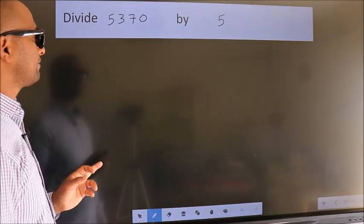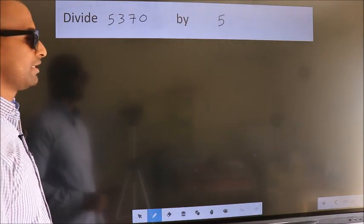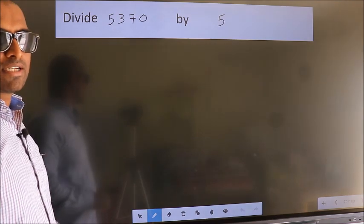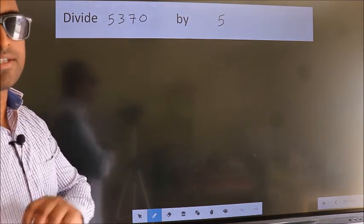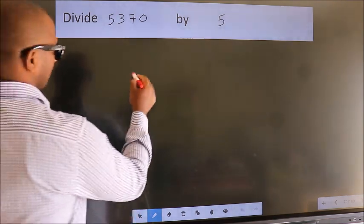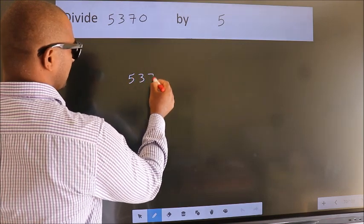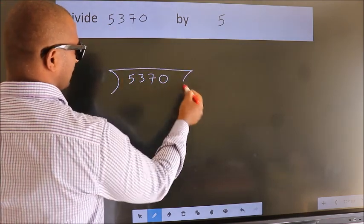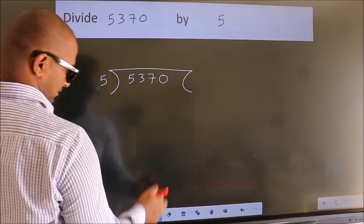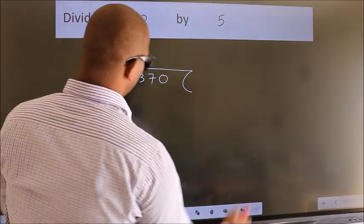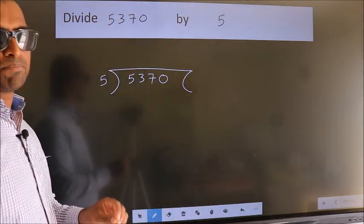Divide 5370 by 5. To do this division, we should frame it in this way. 5370 here, 5 here. This is your step 1.